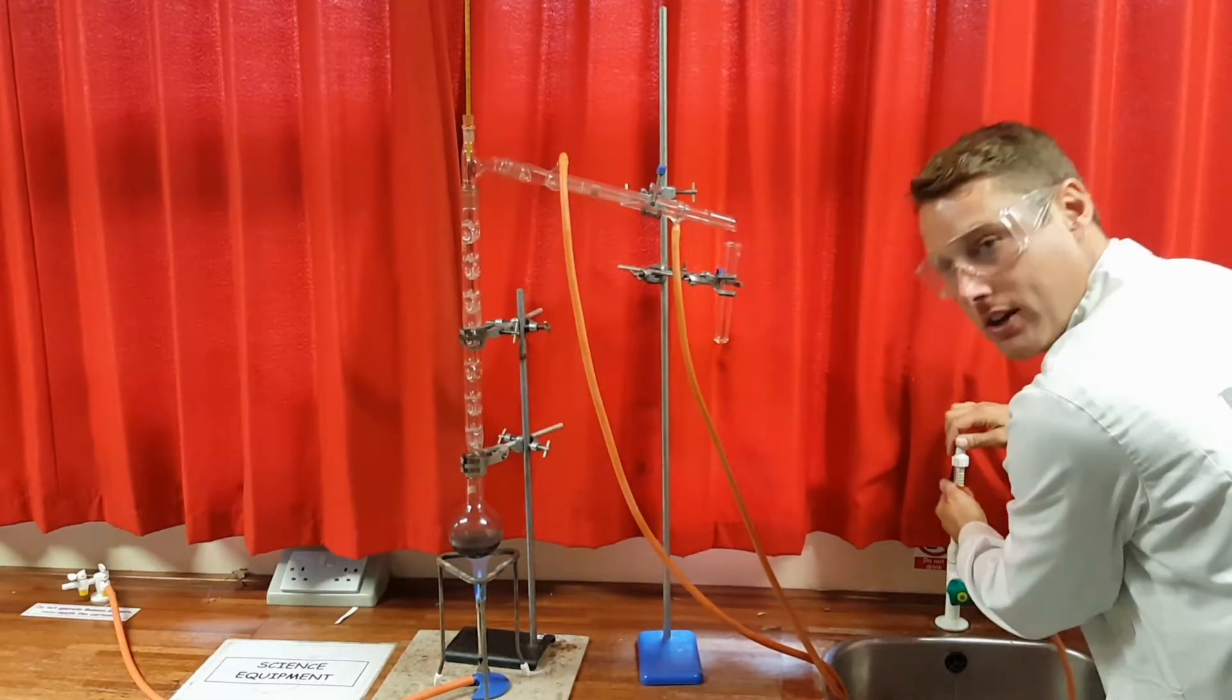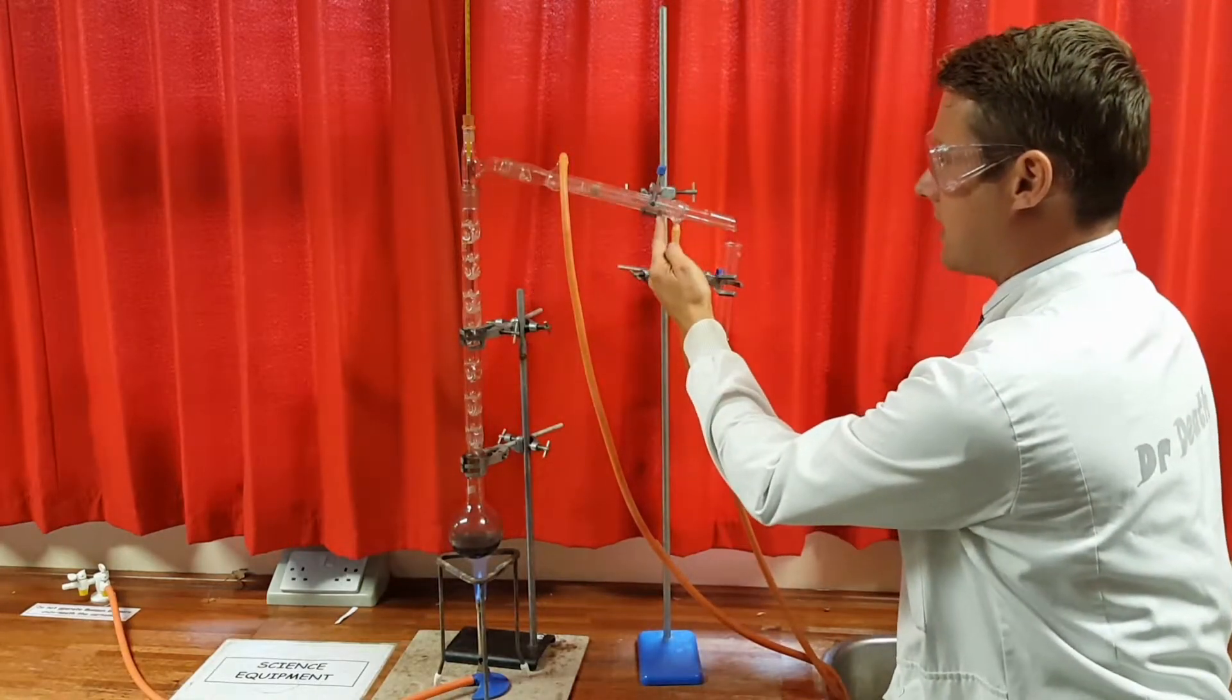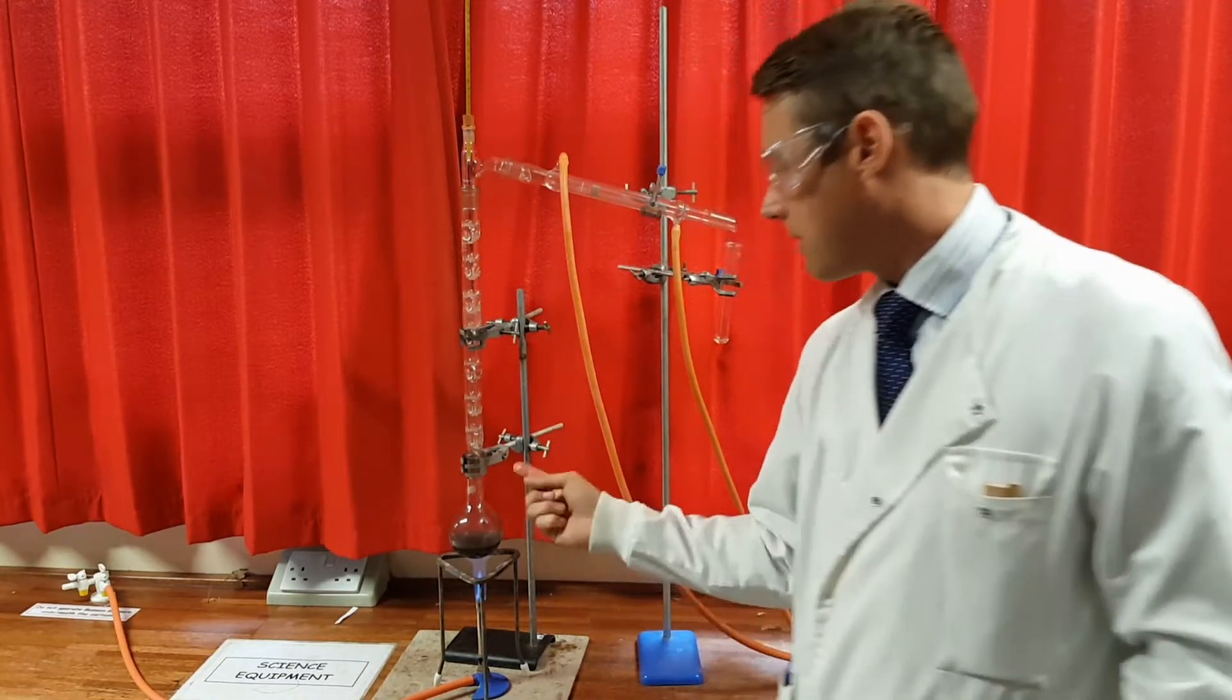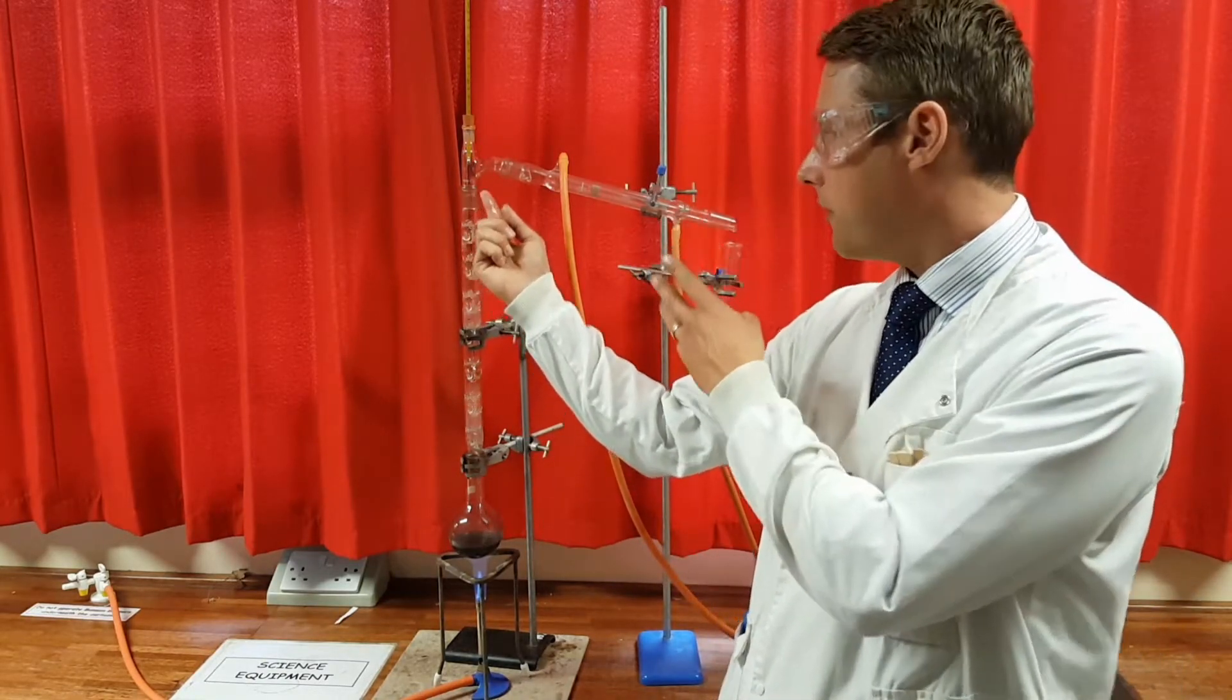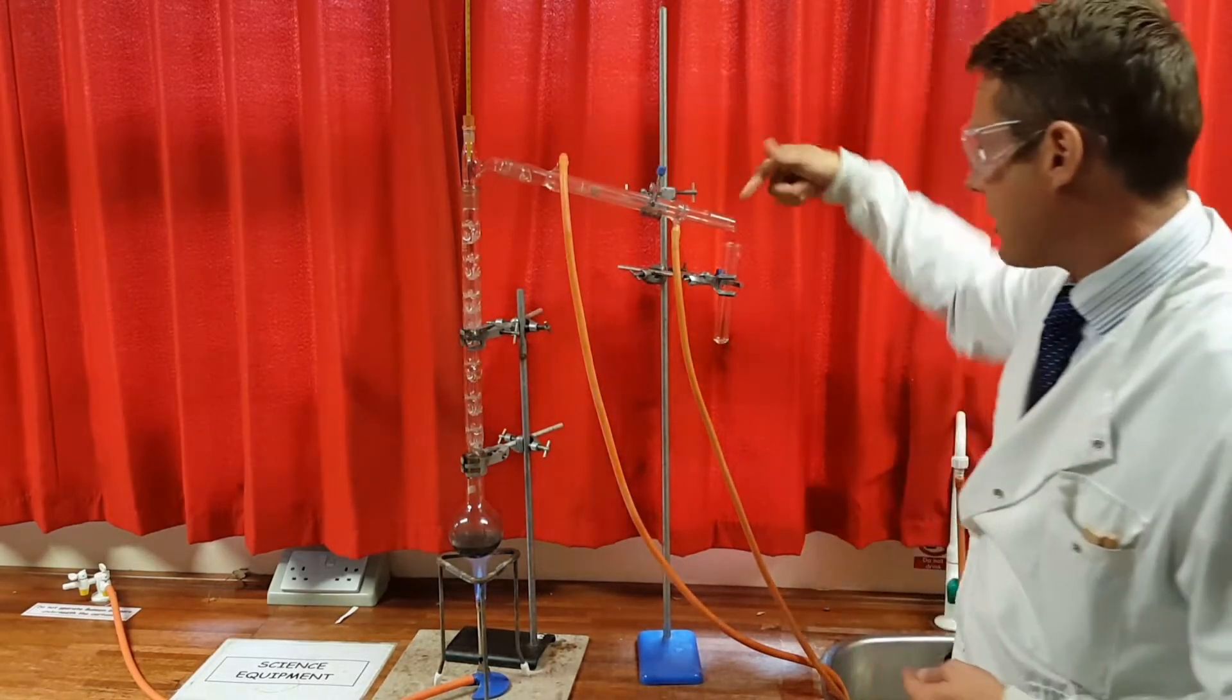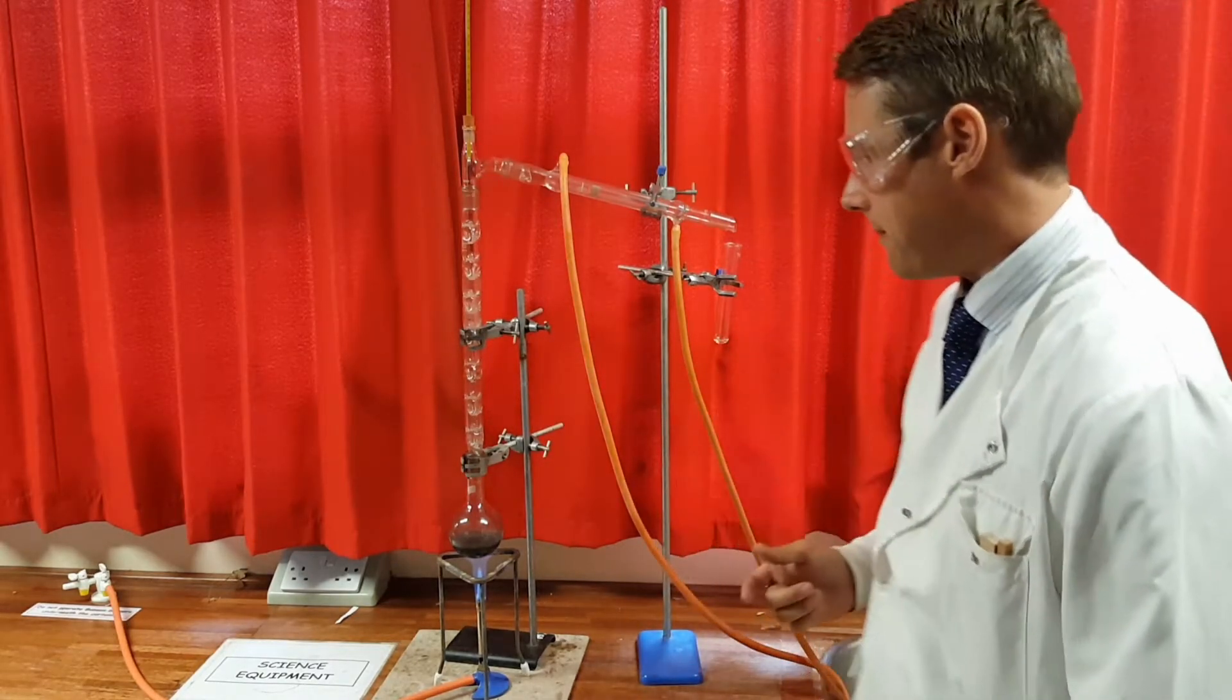So we've got a Liebig condenser in here, and the idea is to keep that nice and cool. So any gas particles that come down the tube, let's just take a quick look. There we go, just filling up with water and the water coming back out down here. Should be nice and cool in there. Any gas particles coming from here, the hydrocarbons coming up and staying as a gas even at the top of the column, going to come down into our condenser and turn back into a liquid. And that should run out at the end, and we can collect our fraction in this boiling tube here.